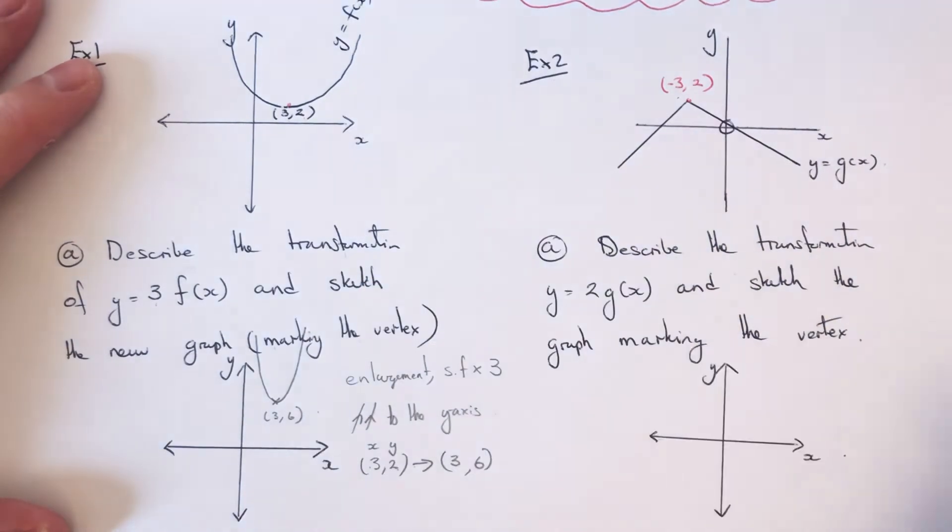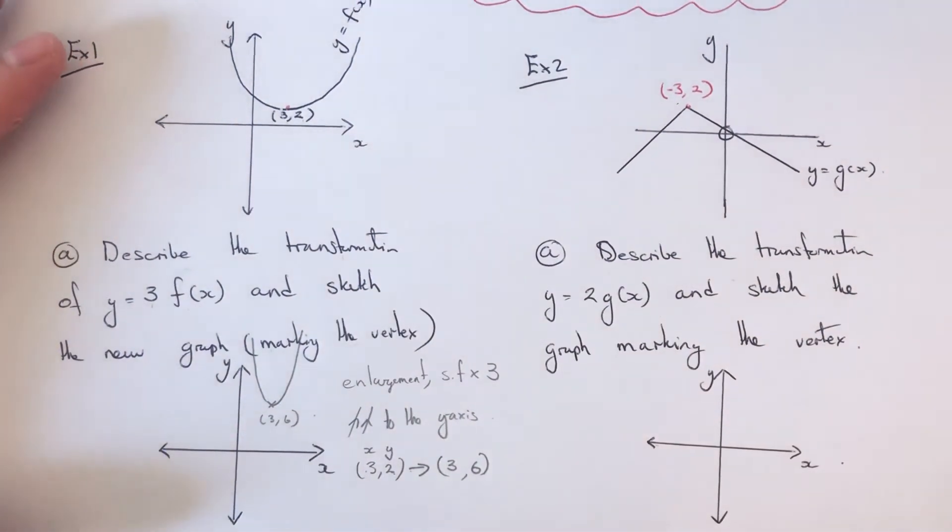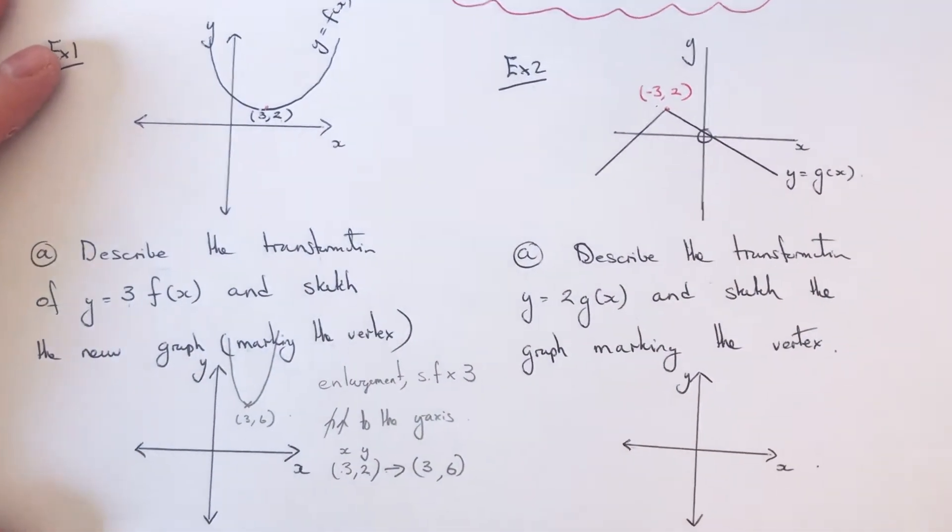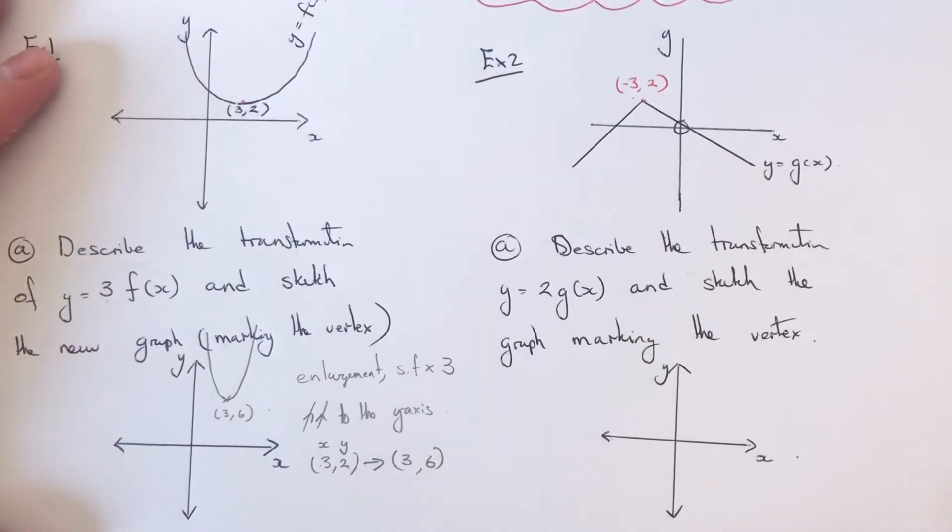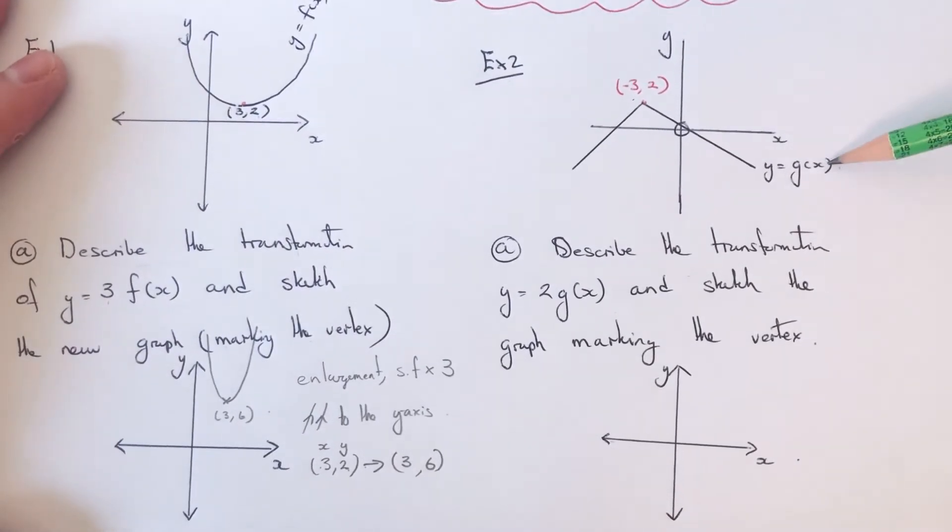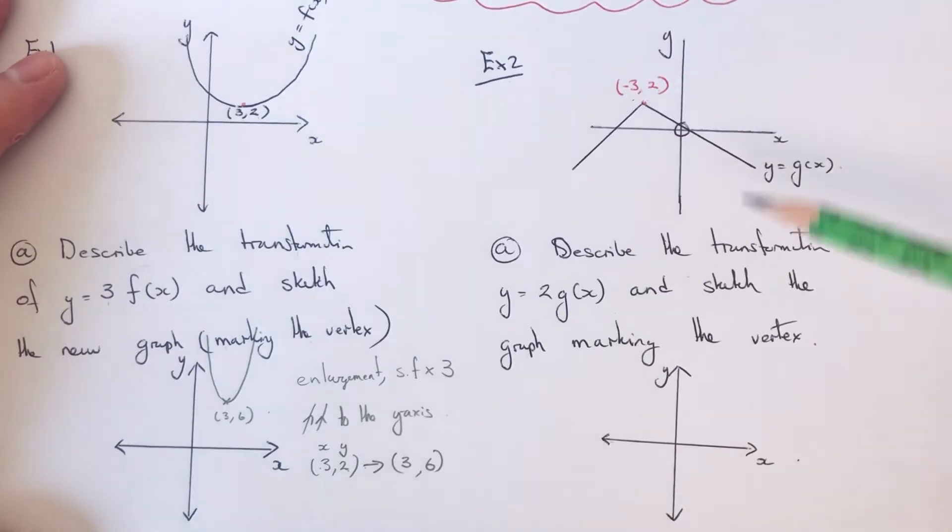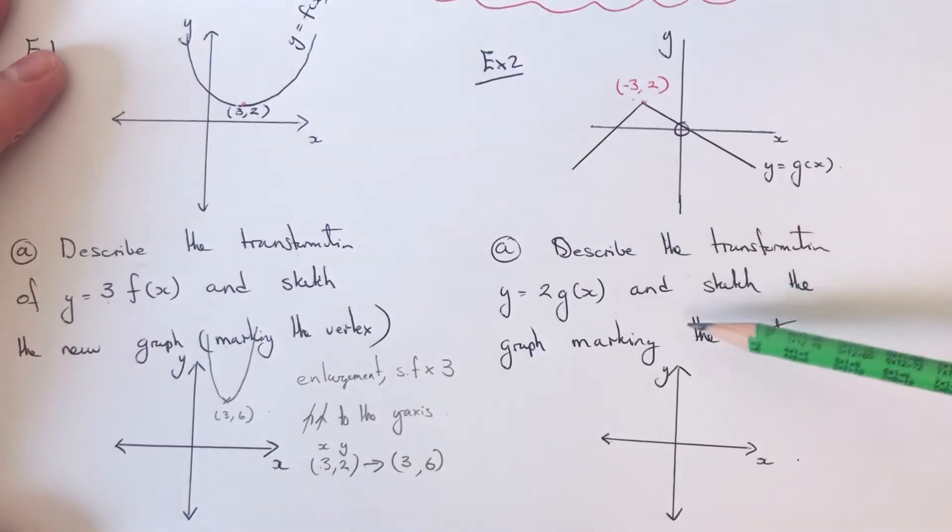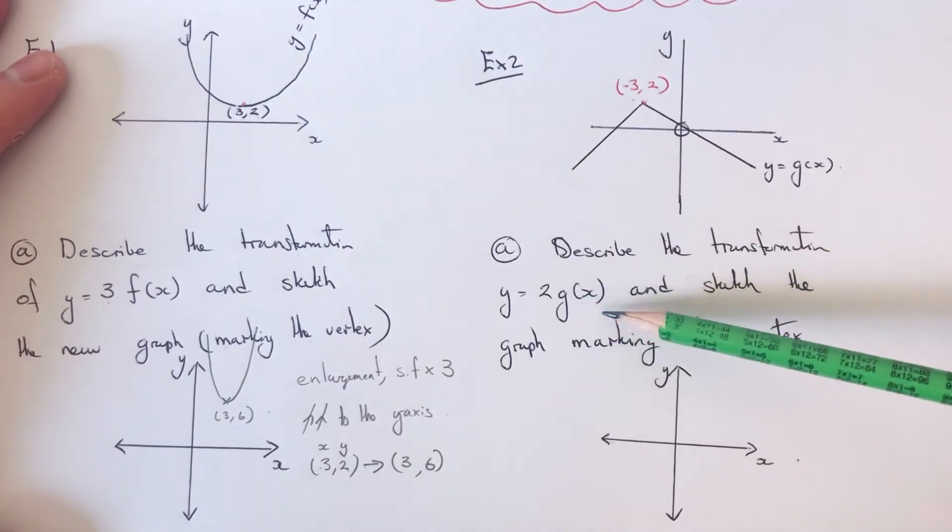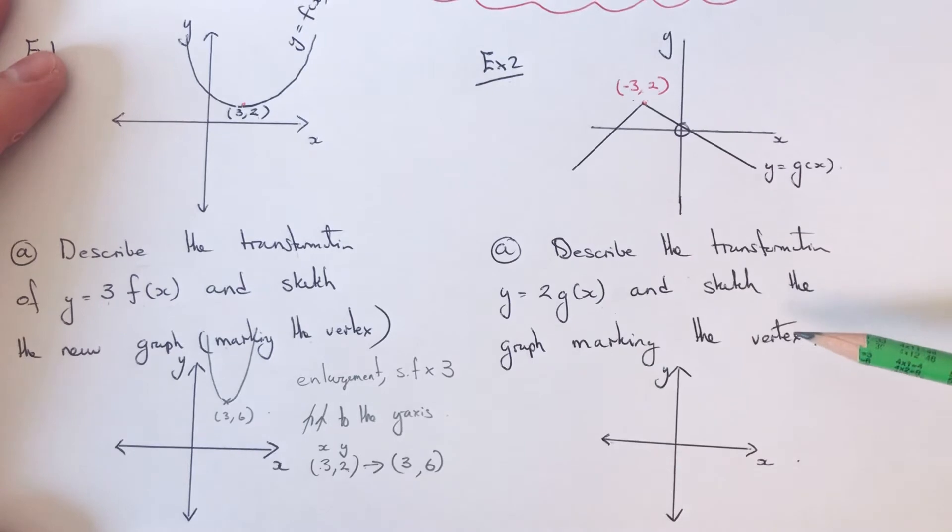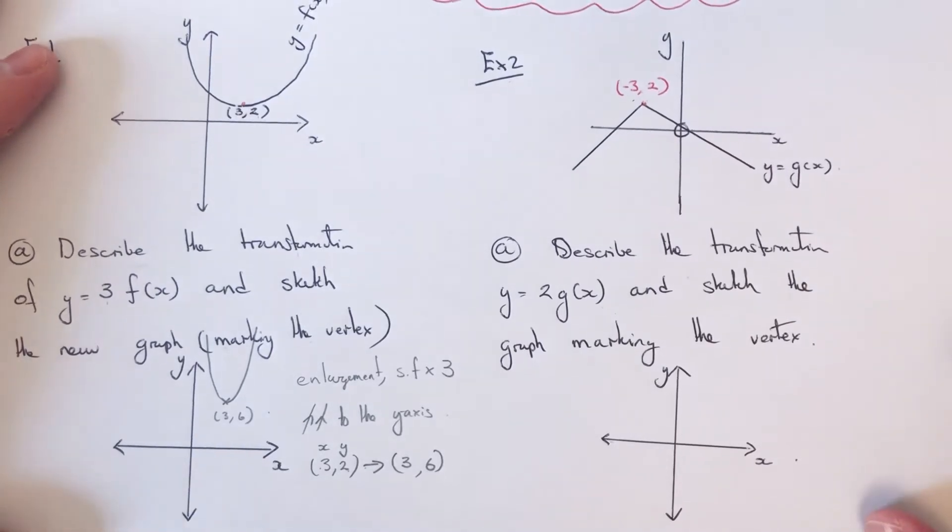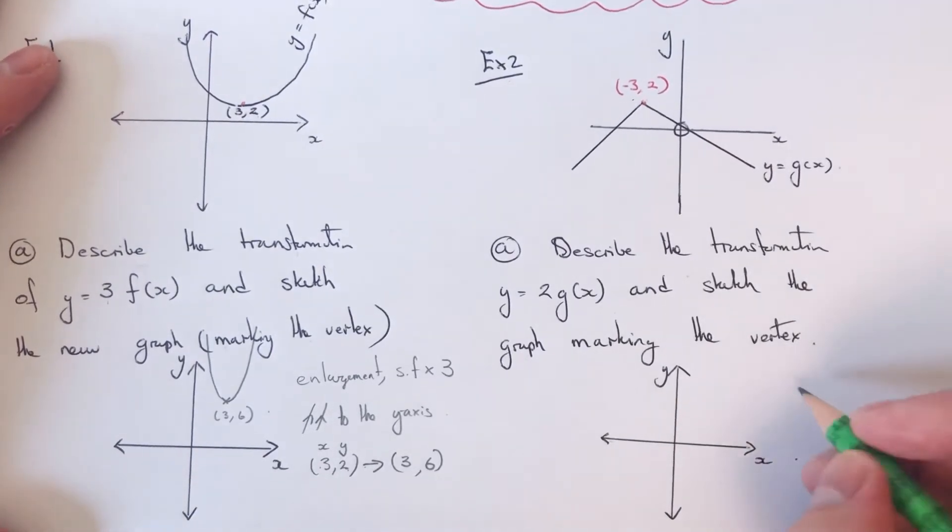Let's have a look at a second example. This time we've got the graph y equals g of x with the vertex at minus 3 comma 2. First part is describe the transformation y equals 2 g of x and sketch the graph, marking the vertex. So again, this would be an enlargement.